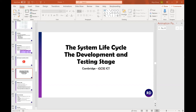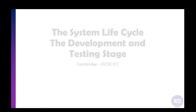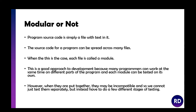The next phase of the system life cycle is the development and testing stage. The first thing we need to look at is whether or not your program source code is going to be modular or not. All a program is, is just a file with some text in it. You can actually write most programs — in fact all programs really — in Notepad. You just need a compiler to change it into an actual program you can execute. The source code for a program can be spread across many files, and when this is the case, each file is called a module.